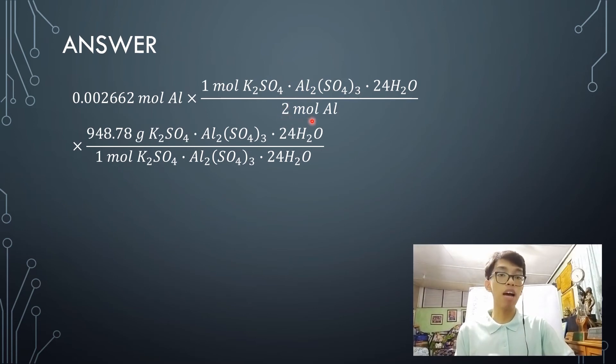Now that you have your mole of alum, you multiply that by its molecular weight. In this case, it's 948.78 grams of alum. Now, solving for that gives us 1.263 grams of alum.